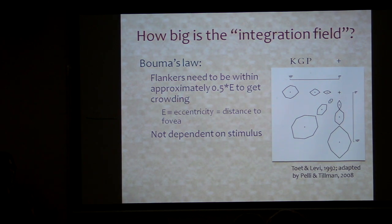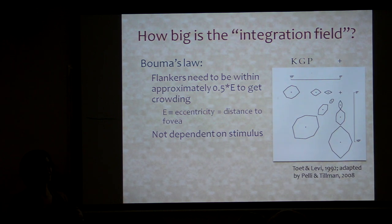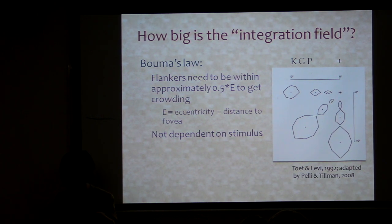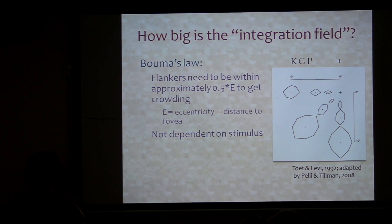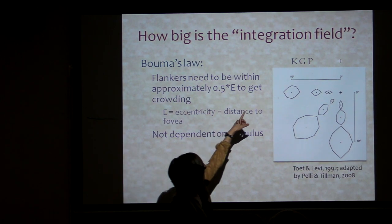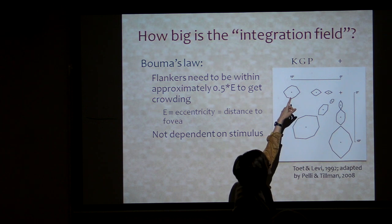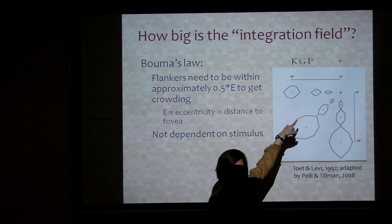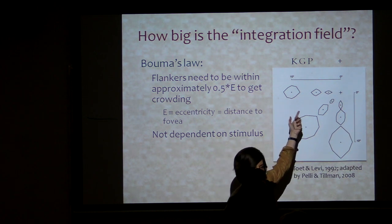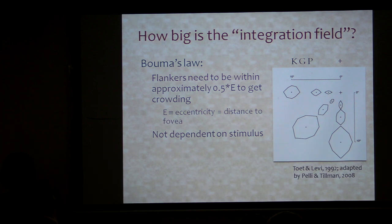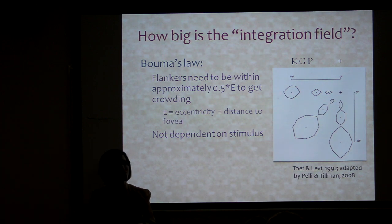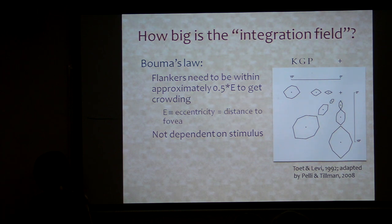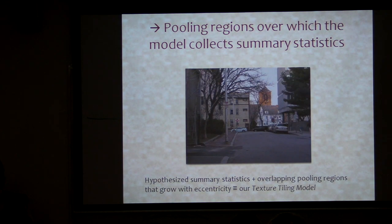So if you are integrating over an excessively large region, what is that region? The crowding literature had very nicely supplied us with a good guess. There's a thing referred to as Bouma's Law, which suggests that for the flankers to make it hard to recognize the central target, those flankers have to be within, to first approximation, about half the eccentricity of the symbol you're trying to recognize. And this seems to be not dependent upon the stimulus — it's just the region over which you pool stuff. That essentially suggests what these pooling regions should be.